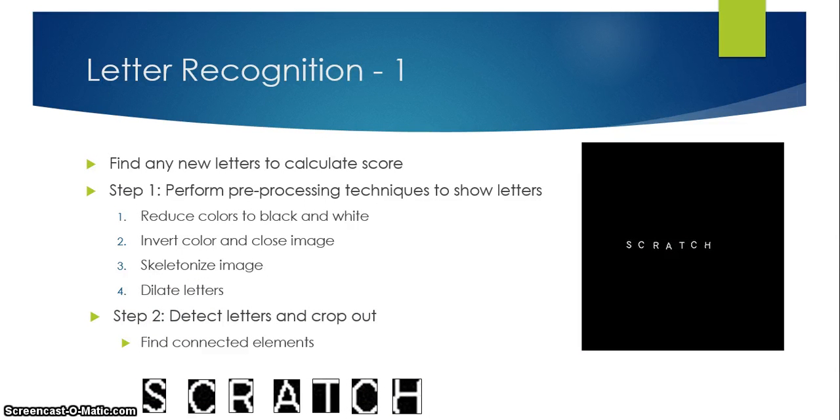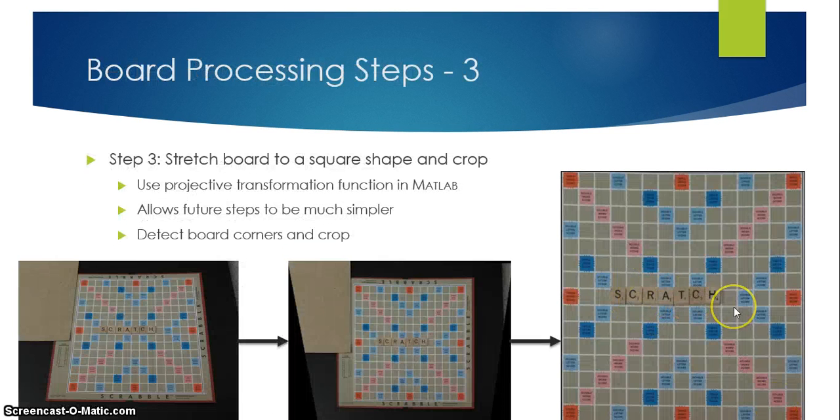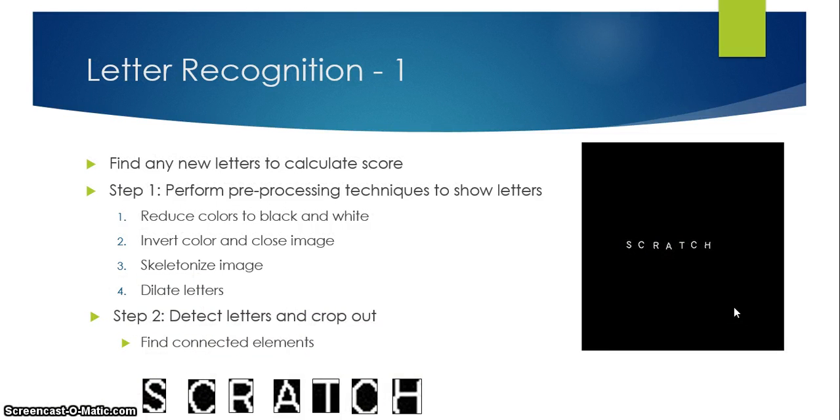After that's done we go into the second step of the process which is letter recognition. In this step all the new letters that are placed on the board by any player are detected by the computer. To perform this step first we reduce the image to its black and white components so we only keep the black letters of the word. I then invert the image so that the letters show up white and then perform a series of morphological operations to bring out the letters. So I first perform a close image and open image to connect any components and to remove any square pixels that were left from the previous step. I then skeletonize the image and then I dilate the letters to have them show up really well against the black.